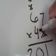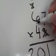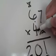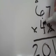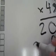Next thing I'm going to do is my 4 times my 6. 4 times 6 is 24, plus 2 is 26. I'm going to write that down here.